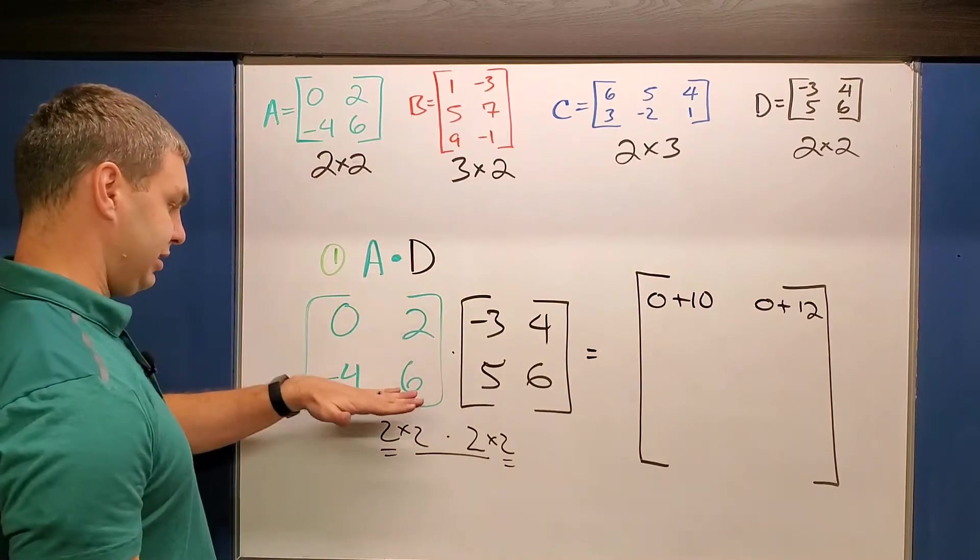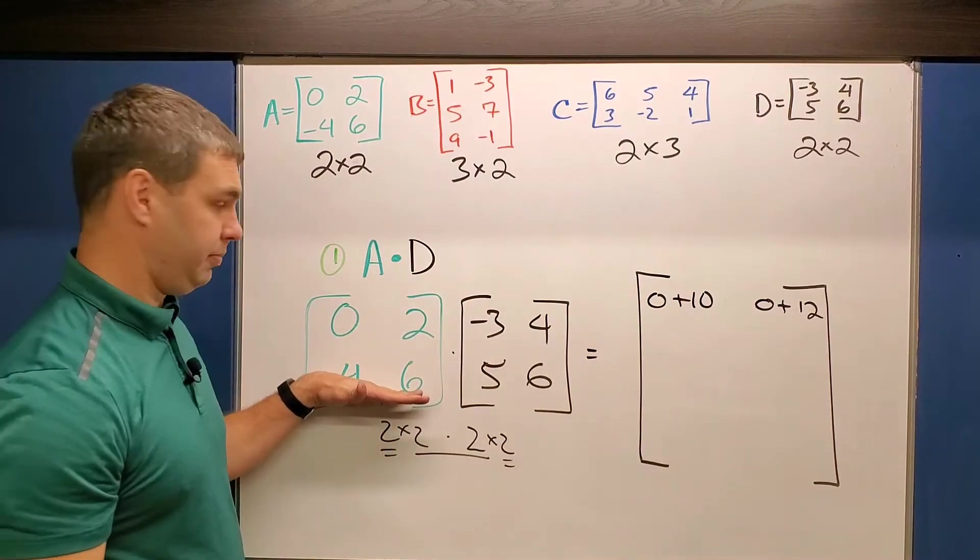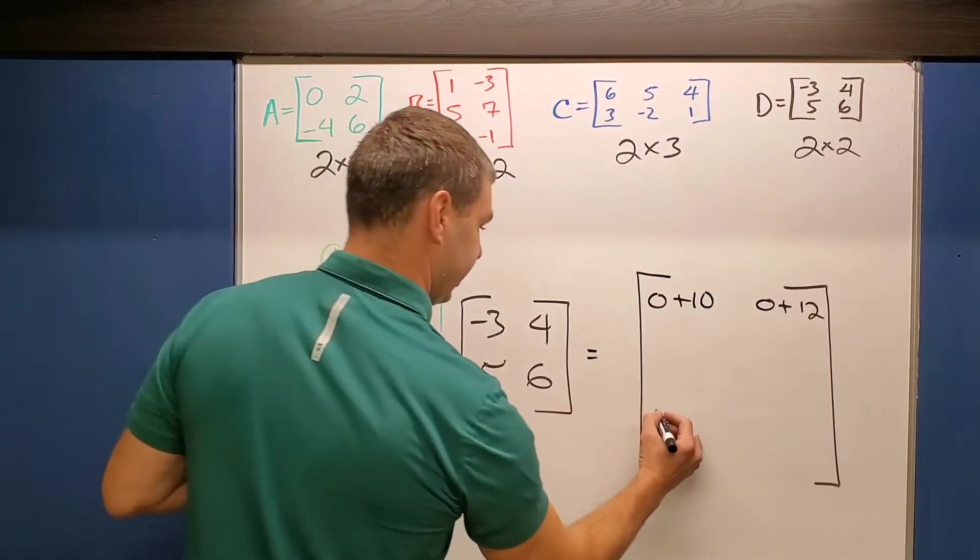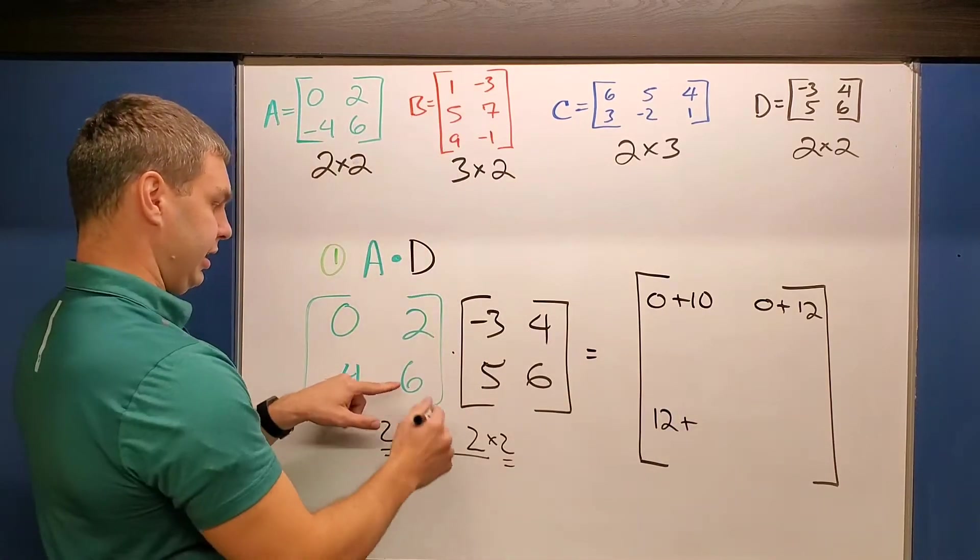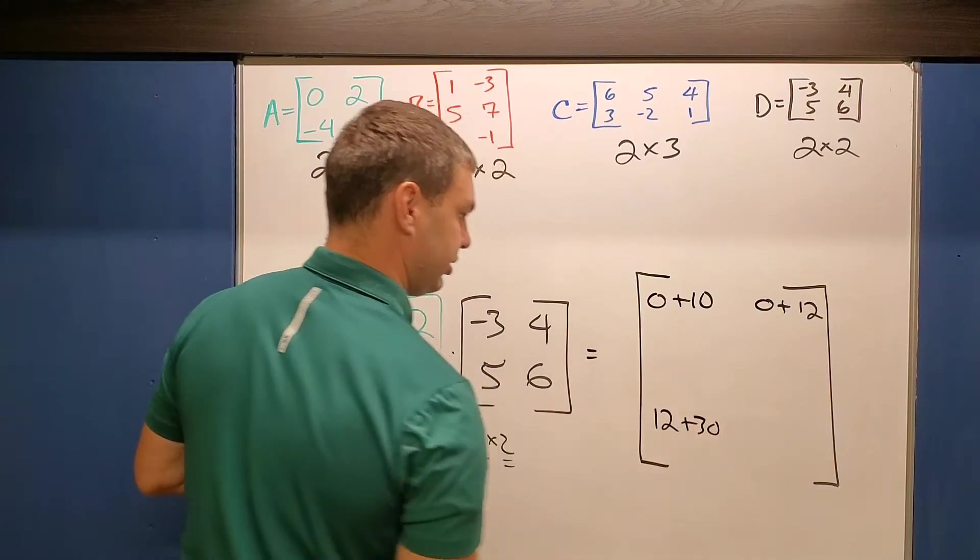And then for our bottom ones, now I can do my second row times my first column. So -4 times -3 is a positive 12 plus we're always adding these together. And then 6 times 5 is 30.